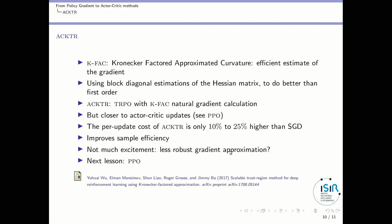The ACTOR algorithm is based on the KFAC paper — Kronecker-Factored Approximated Curvature — which provides a method to efficiently estimate the gradient using block-diagonal estimations of the Hessian matrix to do better than first-order methods. ACTOR can be seen as TRPO with a Kronecker-factored approach to the natural gradient calculation, though for updating the critic it uses an approach closer to PPO, making it closer to actor-critic updates. The paper shows that the update cost of ACTOR is only 10–25% higher than standard gradient descent despite the second-order approach, improving sample efficiency. However, there was not much excitement about this paper — block-diagonal estimations may make the gradient approximation less robust, so it works well in some cases and worse in others.